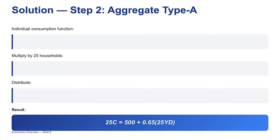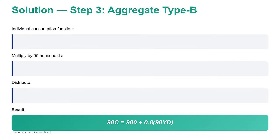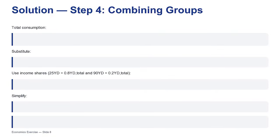Now we combine individual spending behavior with who actually has the income — it's a weighted average. The final aggregate MPC takes Type A's MPC and multiplies by their income share, then adds Type B's MPC multiplied by their income share. For Type A: 0.65 times 0.8 equals 0.52 — meaning 80% of any new dollar flows through Type A's spending habits. For Type B: their higher MPC of 0.8 multiplied by their small 0.2 income weight gives 0.16. Adding those: 0.52 plus 0.16 equals 0.68.